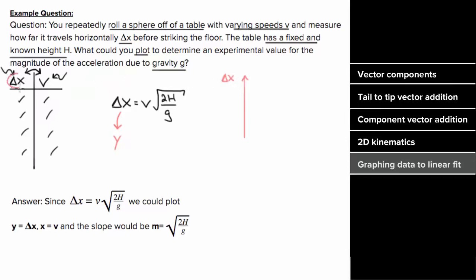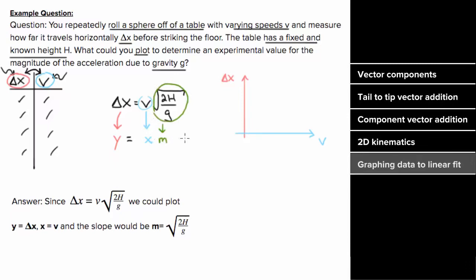So our y quantity on the vertical axis would just be delta x, which is one of the quantities that was varying. Similarly, the other quantity that's varying is v, so I'll call v my x. That means the horizontal axis is going to be v. If this had been v squared, I would have had to plot v squared on the horizontal axis. And if this were the square root of v, I would have to plot the square root of v on the x-axis. But since it was just v, I can get away with just plotting v on the horizontal axis. Now we can figure out what the slope represents. Everything that multiplies what we called x is going to be our slope — and that means the entire term, root 2h over g, is the slope of this graph.